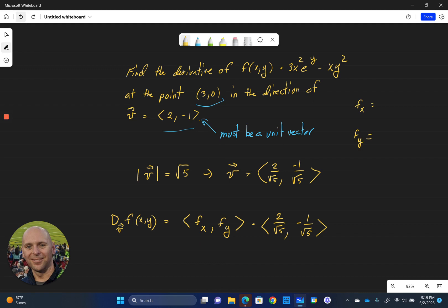The partial of f with respect to x, going through term by term here, the first term's partial with respect to x is going to be 6x e to the y. The second term's partial with respect to x is going to be y squared, so minus y squared.